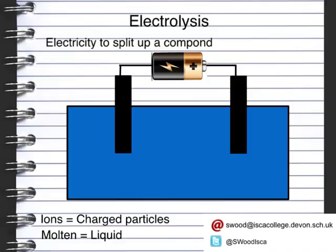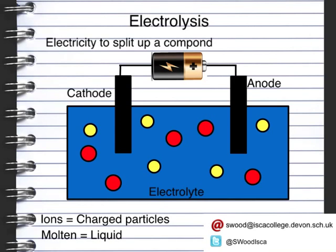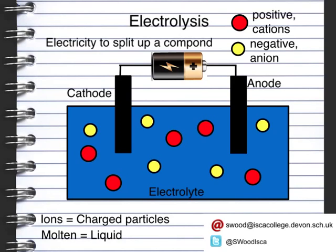These ions are able to move freely within our solution. Now, this solution has a name as well, and this is known as the electrolyte. When you turn the power supply on, you have a positive electrode, known as the anode, and a negative electrode, known as the cathode. Within the solution, you have two types of ion: firstly, you have a positive ion, which is known as a cation; secondly, you have a negative ion, which is known as an anion.